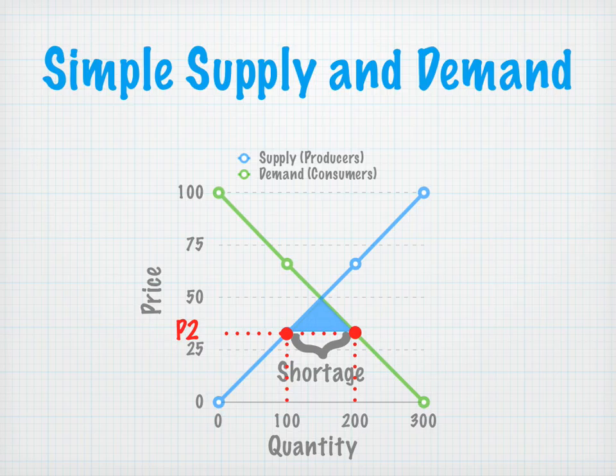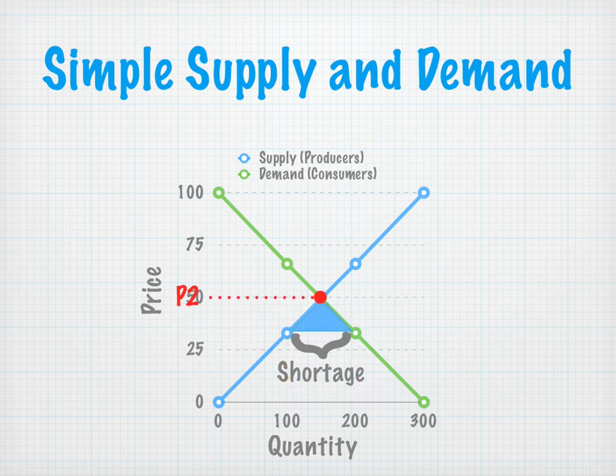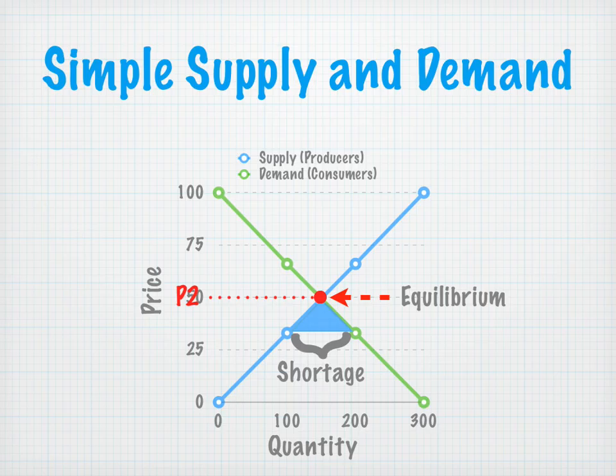So what do we do to fix that? The mutual determination is made — consumers would be willing to buy less at a higher price, and producers would be willing to create more at a certain price. So if we raise the price to equilibrium, we see again at $50 they're willing to buy 150 units of a certain Xbox 360 game.